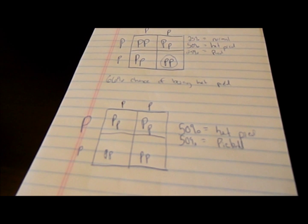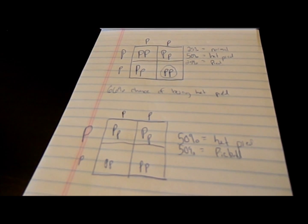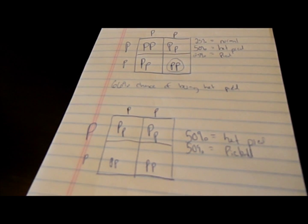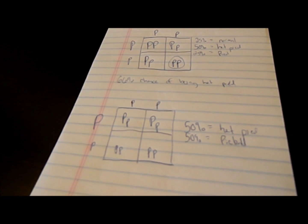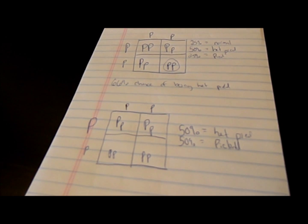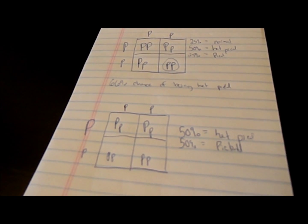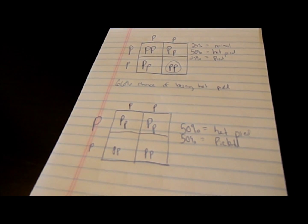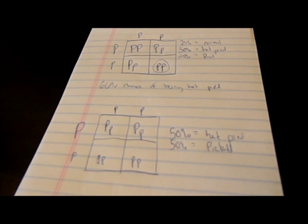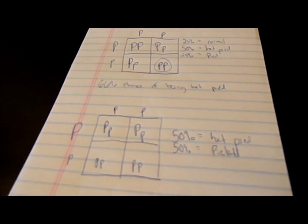The last breeding you can do with recessives is obvious: if you breed a piebald to a piebald, they're only going to pass on piebald genes, so every single egg is going to be piebald.